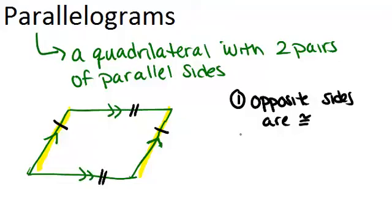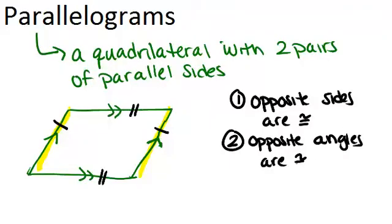Similarly, opposite angles are also congruent. So that means this angle over here is the same measure as this angle over here. And similarly, these two red angles are also congruent.